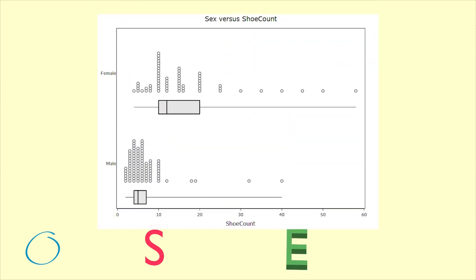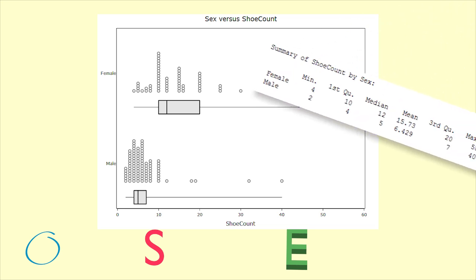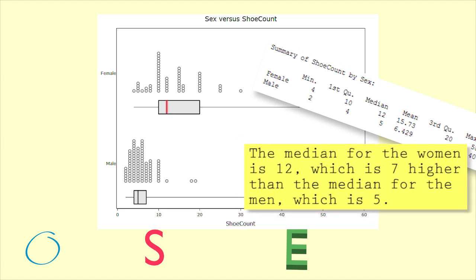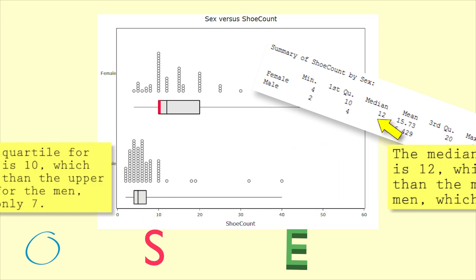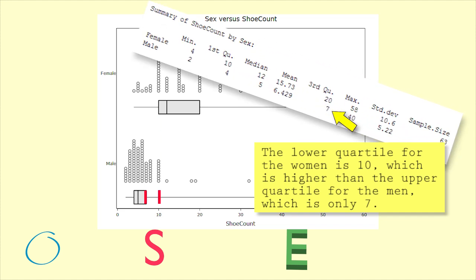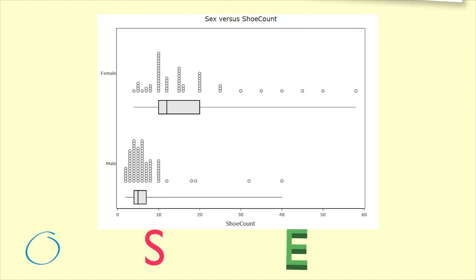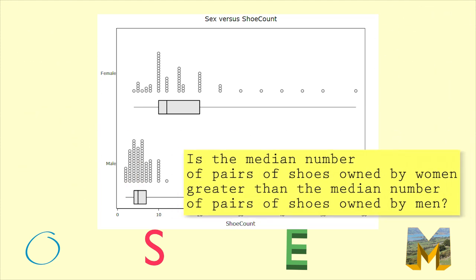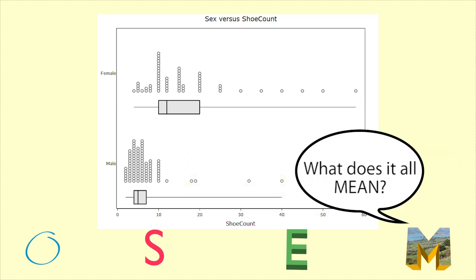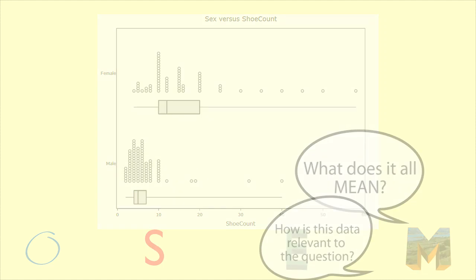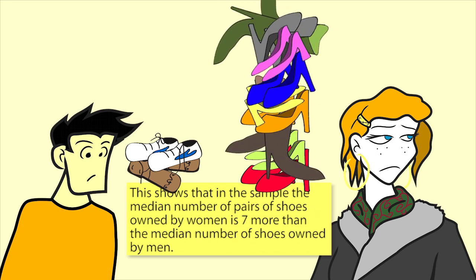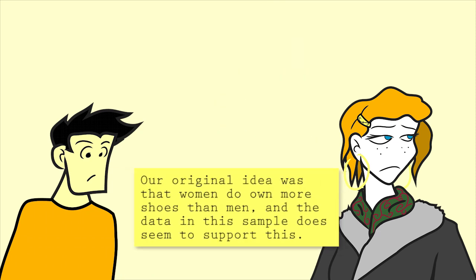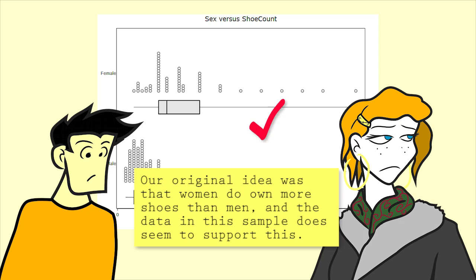Evidence — here we need to give values to support our observation. We may need to draw on summary values if they are difficult to read off the graph. We could say the median value for the women is 12, which is 7 higher than the median for the men, which is 5. Or we could say the lower quartile for the women is 10, which is higher than the upper quartile for the men, which is only 7. Meaning — this is where we link the evidence from the graph with the context or story behind the data and the investigative question. This shows that in the sample the median number of pairs of shoes owned by women is 7 more than the median number owned by men. Our original idea was that women do own more shoes than men, and the data in this sample does seem to support this.